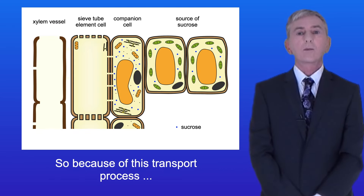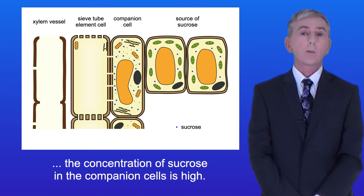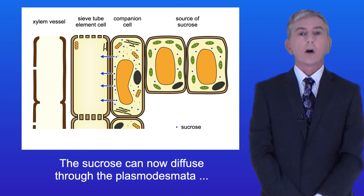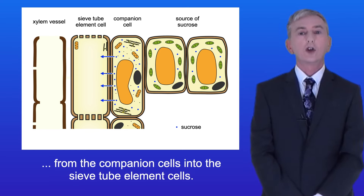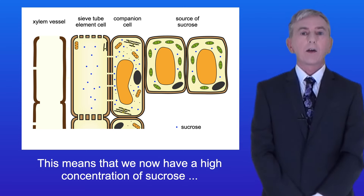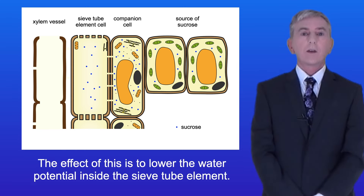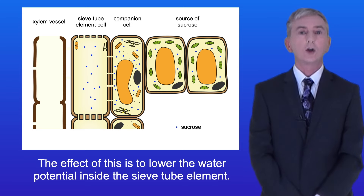Because of this transport process, the concentration of sucrose in the companion cells is high. The sucrose can now diffuse through the plasmodesmata from the companion cells into the sieve tube element cells, meaning we now have a high concentration of sucrose in the sieve tube element cells. The effect of this is to lower the water potential inside the sieve tube element.